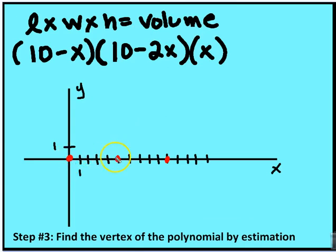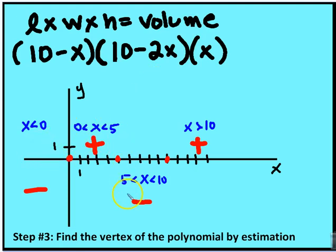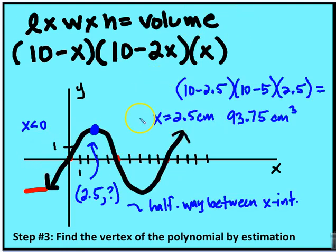We're going to identify the zeros. So the zeros are going to be x is equal to 10, 5, and 0. We're going to plot the zeros. We're going to do some interval testing in these areas. We're going to see that the function looks something like this.